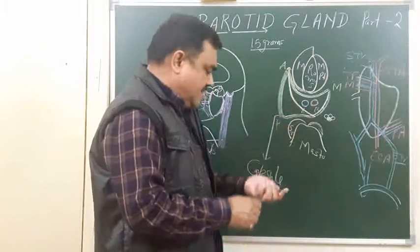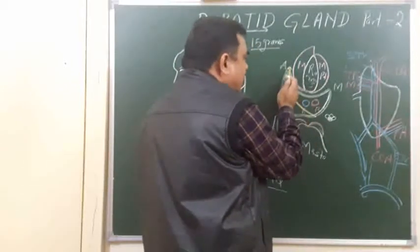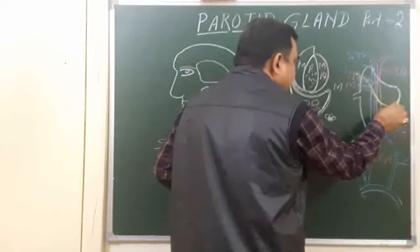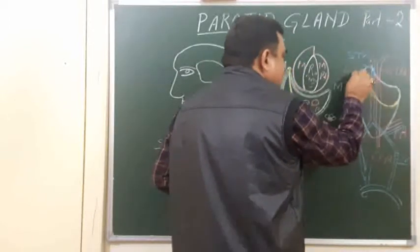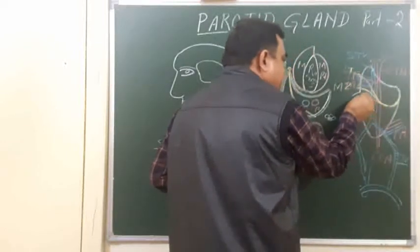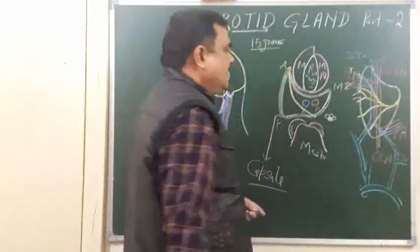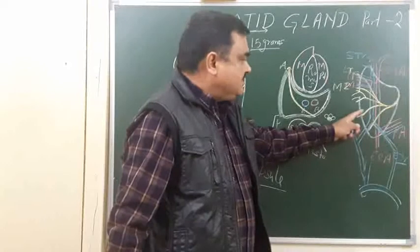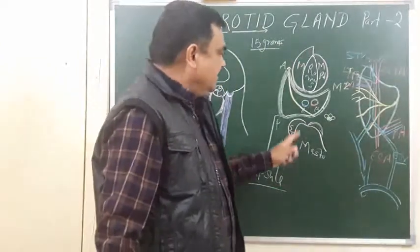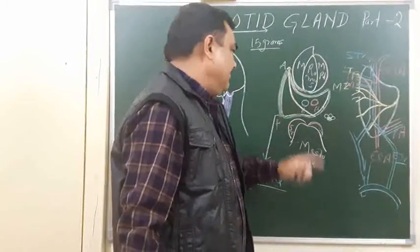The facial nerve enters through the posteromedial surface and runs forward. Within the substance of the gland it divides into five branches: temporal, zygomatic, buccal (with upper and lower divisions), marginal mandibular, and cervical. These five branches arise from the anterior border of the gland. So the three structures from medial to lateral are: external carotid artery, retromandibular vein, and facial nerve.